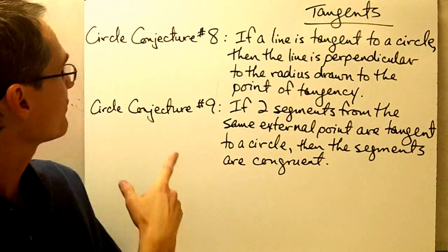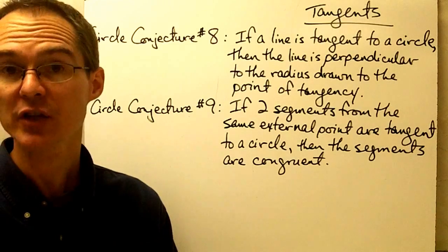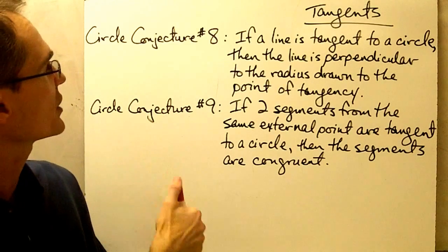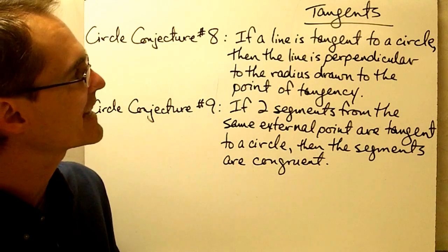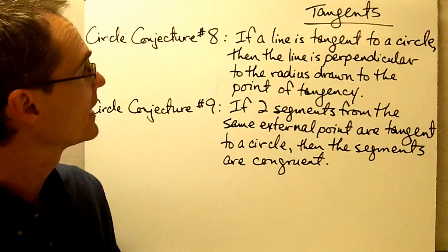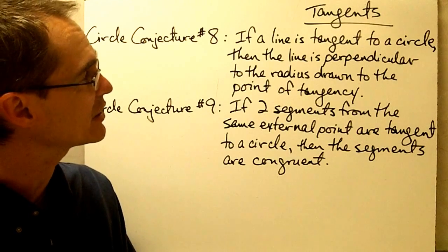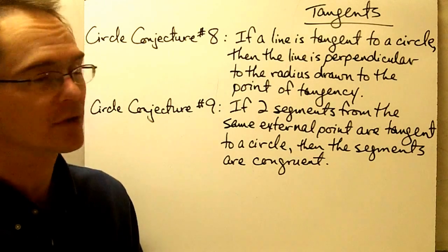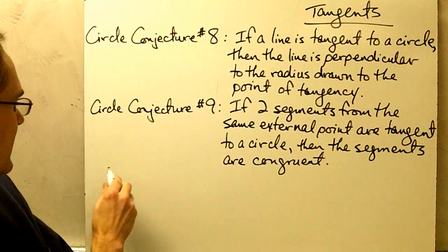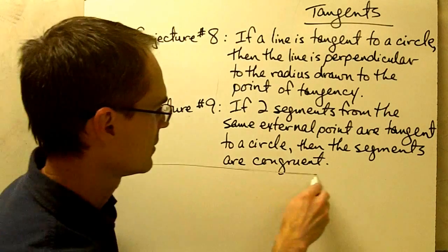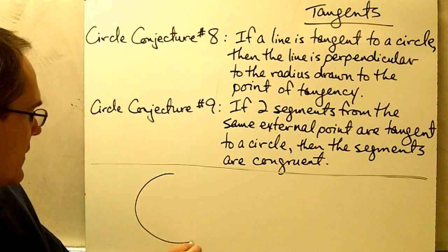We're going to start off by reviewing our two circle conjectures that have to do with tangents. Circle Conjecture number 8 says if a line is tangent to a circle, then the line is perpendicular to the radius drawn to the point of tangency. Let's draw a picture of what this conjecture is saying.